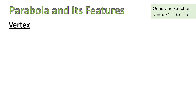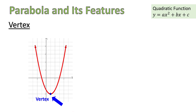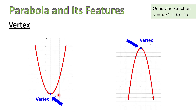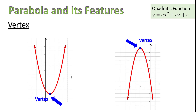Another important feature of parabola is called vertex. Vertex is the lowest point of the parabola if the parabola opens up, or the highest point of the parabola if it opens down. Since vertex is a point, we can describe it by providing its coordinates. So vertex is described in terms of coordinates x and y. For my examples here, the coordinates of the vertex of the first graph are (1, negative 4), and the coordinates of the vertex for the second graph are (negative 2, 9).